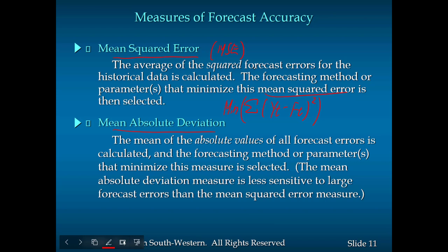We also use mean absolute deviation (MAD) — the mean of the absolute value of all forecast errors — and select the forecasting method that minimizes this measure. The mean absolute deviation is less sensitive to large forecast errors than the mean square error. So if you suspect there is a large forecast error, you should always go with the mean square error index to measure forecasting accuracy. We'll look at a detailed calculation in one of the examples later.